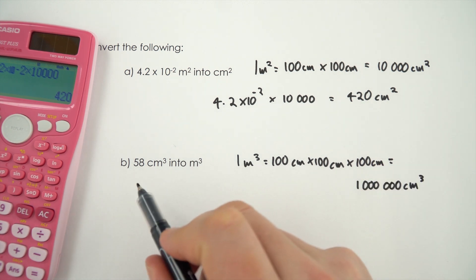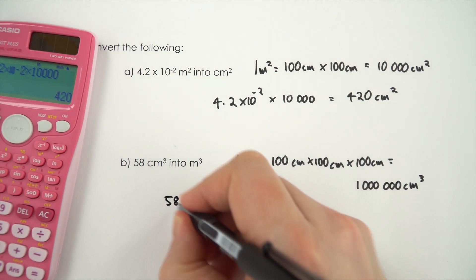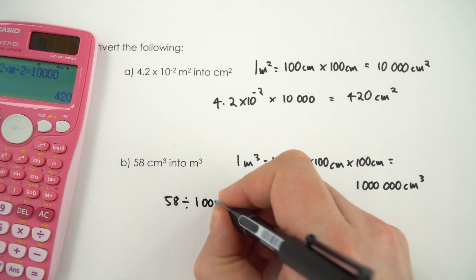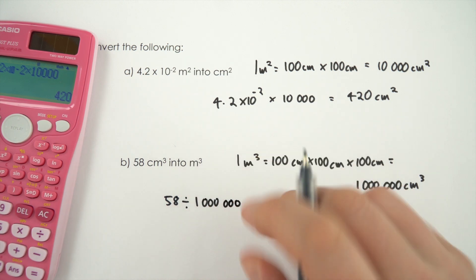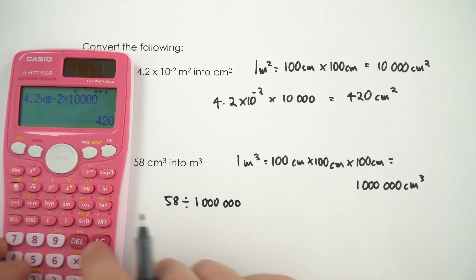So what we need to do now is we need to take this number 58 and we need to divide it by a million. Again I could do this in my head but just to make sure I don't make any mistakes I'm going to do it on the calculator.